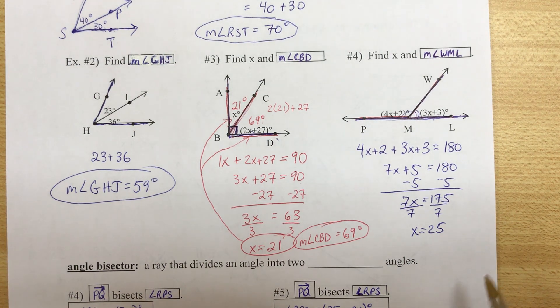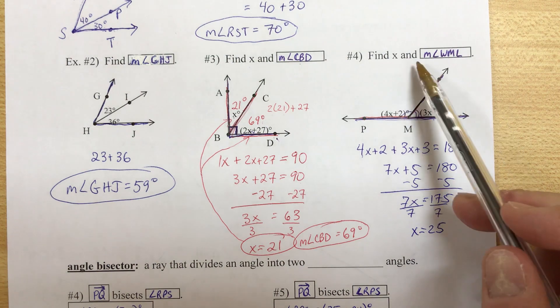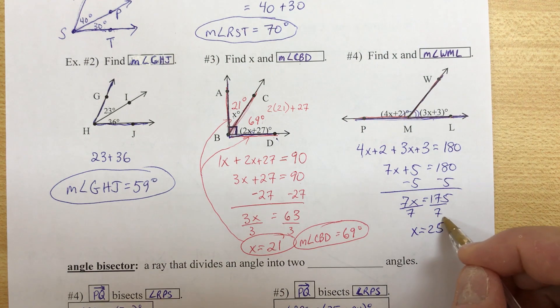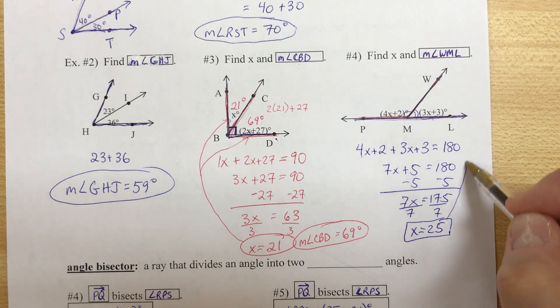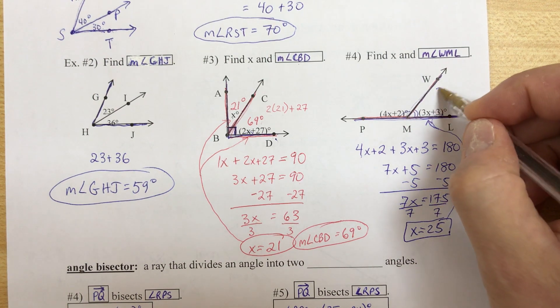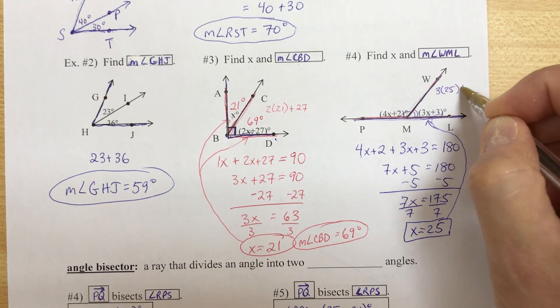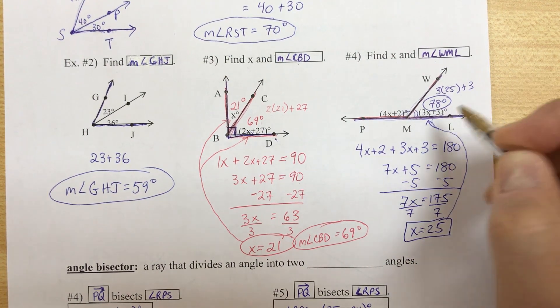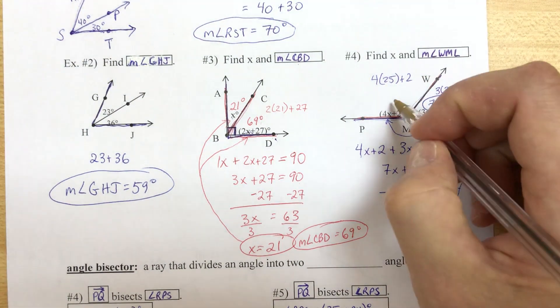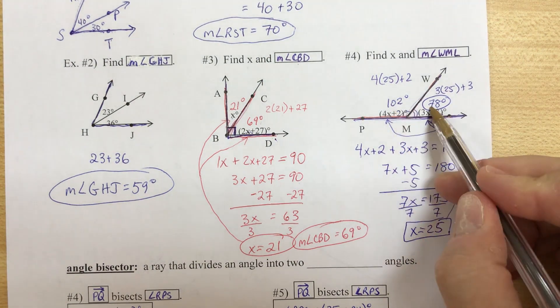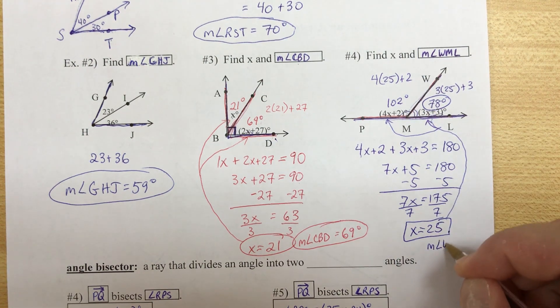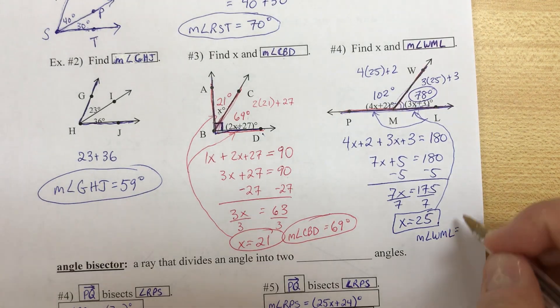Now again, before you move on, have we answered the question. What do they want? Find x? Yes. And the measure of angle WML. So here's x. WML is this angle. So we're going to take our x and substitute 25. So that's 3 times 25 plus 3, which will be 78. If I substitute it here, 4 times 25 plus 2 is 102. Does that add up to 180? Yes. But the answer is measure angle WML equals 78 degrees.